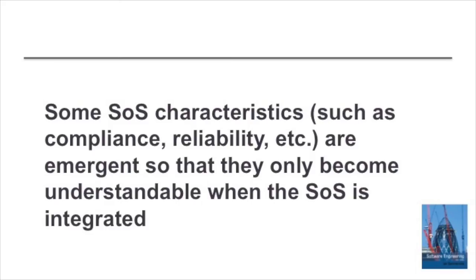Emergence is a characteristic of all systems, where emergence means that you get system behavior which you can't anticipate until you've integrated the system. But it's a particular issue in systems of systems, where characteristics such as reliability and compliance — does the overall system follow the rules and regulations it's subjected to — are emergent characteristics which often appear in systems of systems.